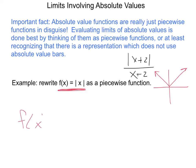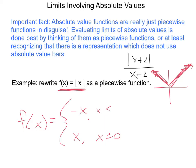We could say that this function looks like the graph of x on one side. So it looks like this function is x when x is greater than or equal to 0. And the other half appears to be negative x when x is less than 0.